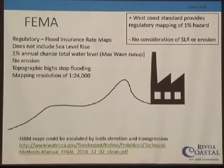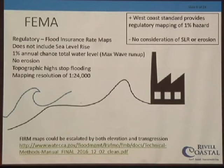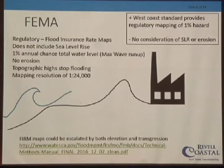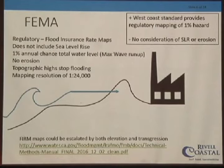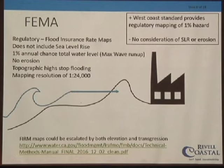FEMA is the regulatory rate maps and does not include sea level rise. We have a 1% annual chance total water level — that's a high tide and large wave event adding up to a total water level, maximum wave run-up. That's what FEMA maps. There's no erosion, and if you have a topographic high like a sand dune, it stops the flooding. They have a national map standard of 1,000 to 24,000. There is no sea level rise included.